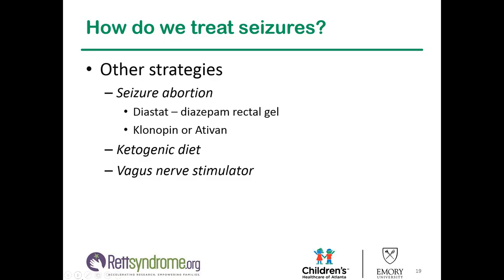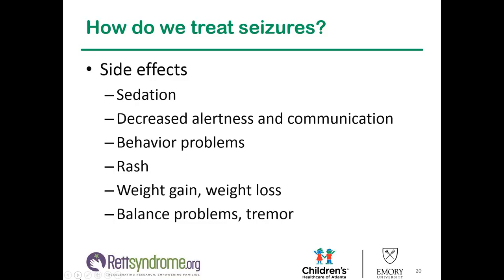The vagus nerve stimulator is like a little pacemaker that goes in the chest and sends signals up to a nerve in the neck — it does not involve brain surgery. Those signals propagate up into the deep portions of the brain to affect the balance of inhibition and excitation. It's a nice treatment because it has few side effects since it's not a drug, and it comes with a little magnet that a parent could hold in front of the device to deliver an extra boost if a patient is having a seizure. Common side effects of seizure medications include sedation, decreased alertness and communication, behavior problems such as depression or agitation, rash, weight gain or weight loss, and problems with balance or tremor.